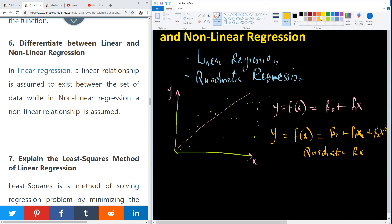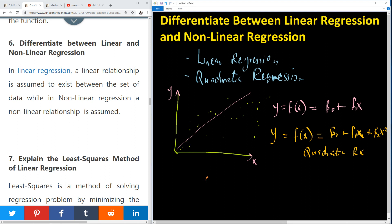So again, we can actually go ahead to write something like this: f of x, y equals f of x equals beta 0 plus beta 1 x plus beta 2 x squared plus beta m x to the m.